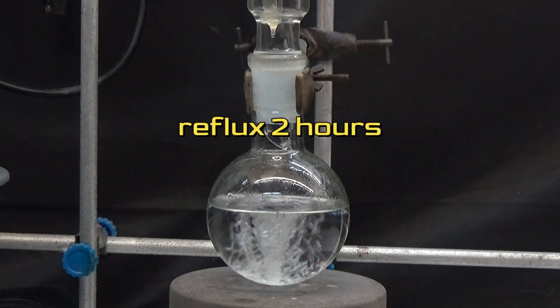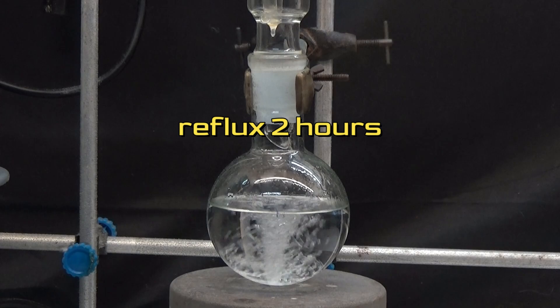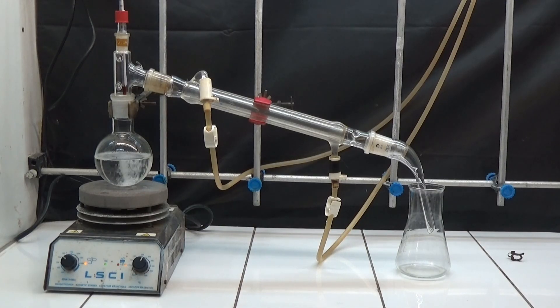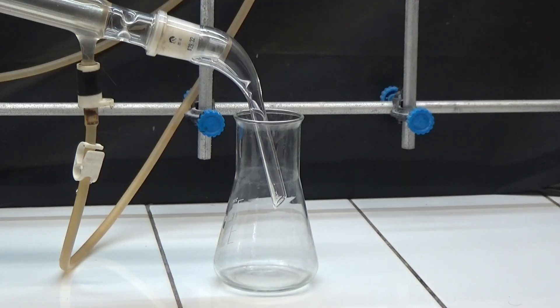For 2 hours, the mixture is heated at reflux. Once reflux is complete, set up distillation equipment and distill as much ethanol as possible under normal pressure.